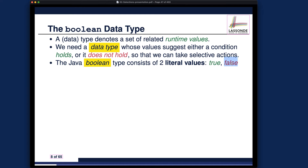The true value corresponds to the case where some condition we specify holds at runtime, meaning it evaluates to be the case. On the other hand, if the condition does not hold or does not evaluate to be the case, it would be false. So either true or false. If you think about binary numbers, you can think of false as the number zero and true as the number one.